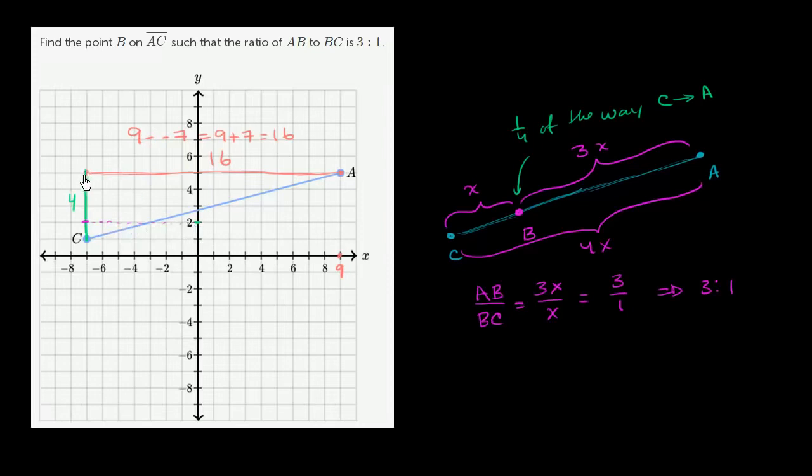And if we go 1 fourth in the horizontal direction, 1 fourth of 16 is 4. So we go 1, 2, 3, 4, and we end up right over here. Our x is negative 3.